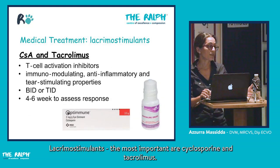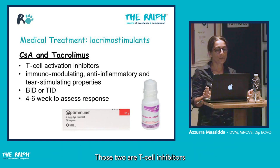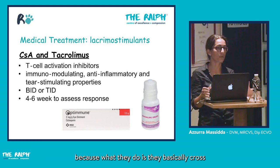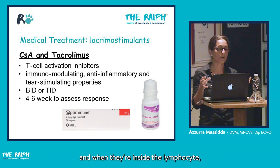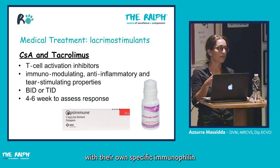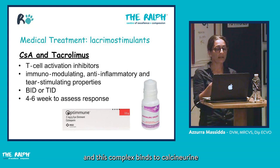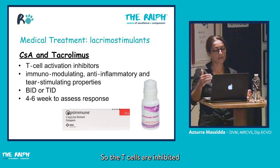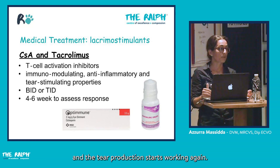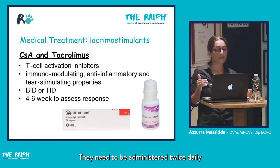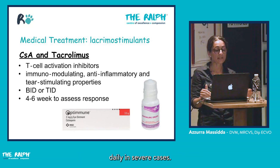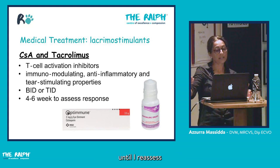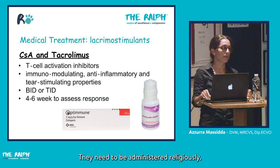The most important immunomodulant lacrimostimulants are cyclosporine and tacrolimus — both are T-cell inhibitors classified as calcineurin inhibitors. They cross the lymphocyte membrane, bind to their specific immunophilin, and this complex binds to calcineurin, inhibiting interleukin-2 and thereby preventing T-cell activation so tear production resumes. They need to be administered twice to three times daily, require a loading period of several weeks, and must be given consistently.